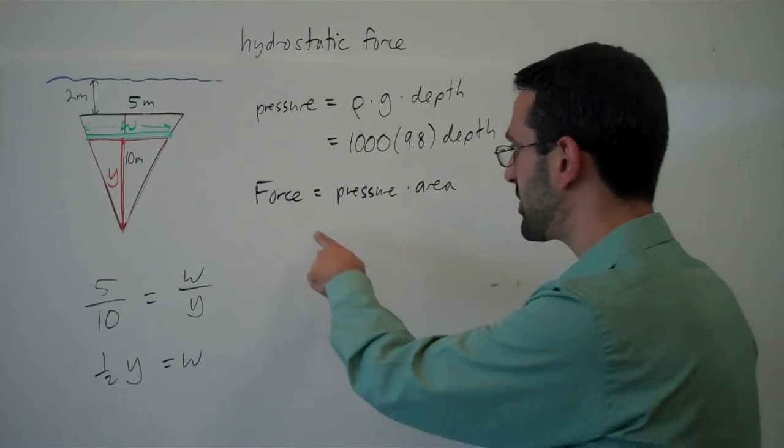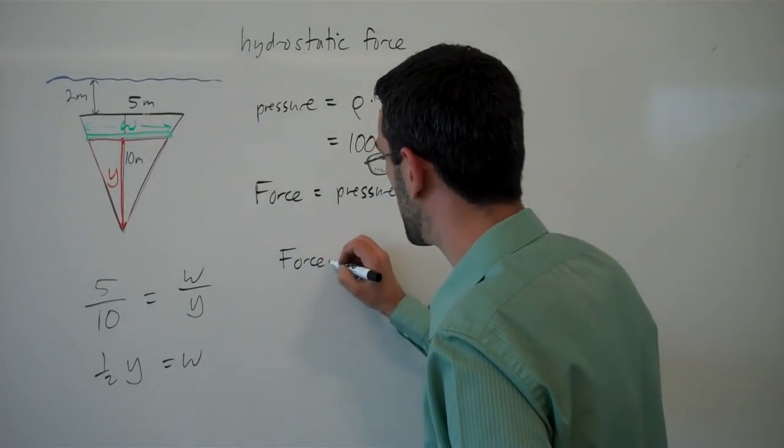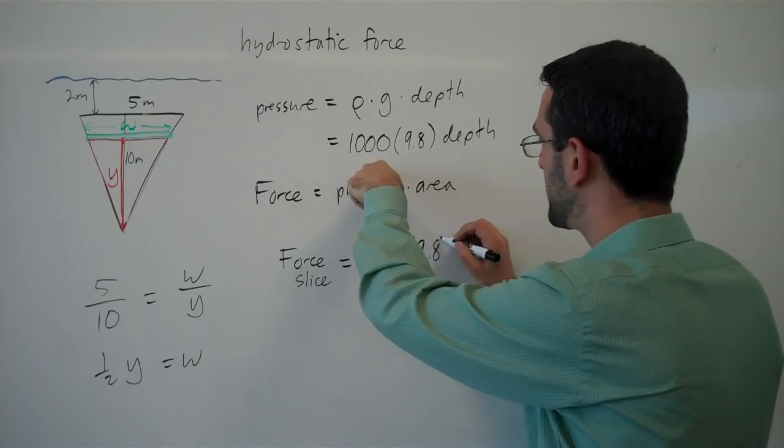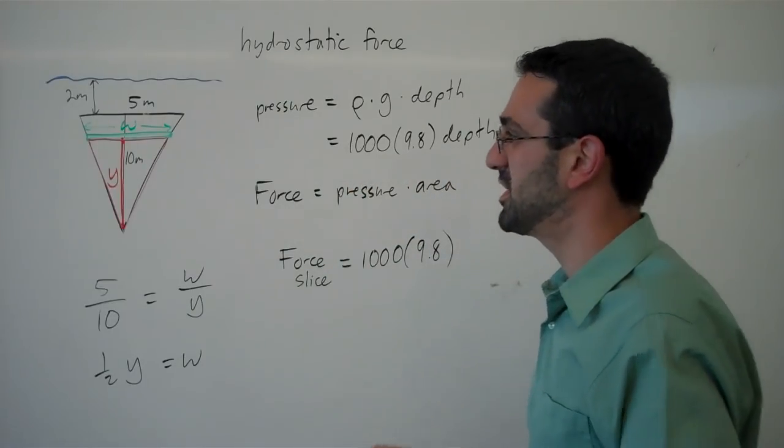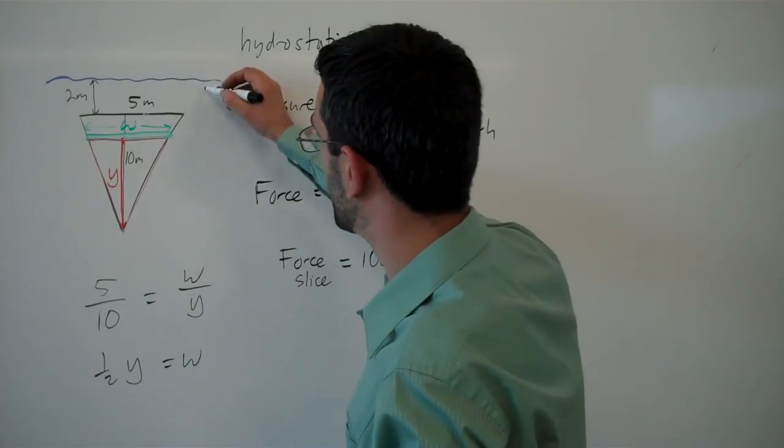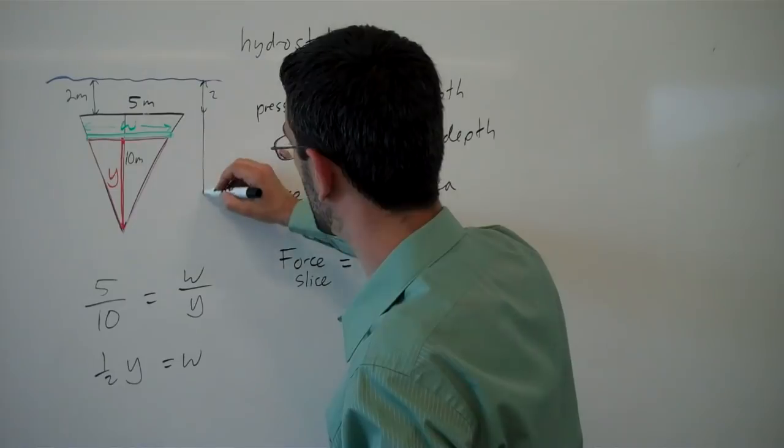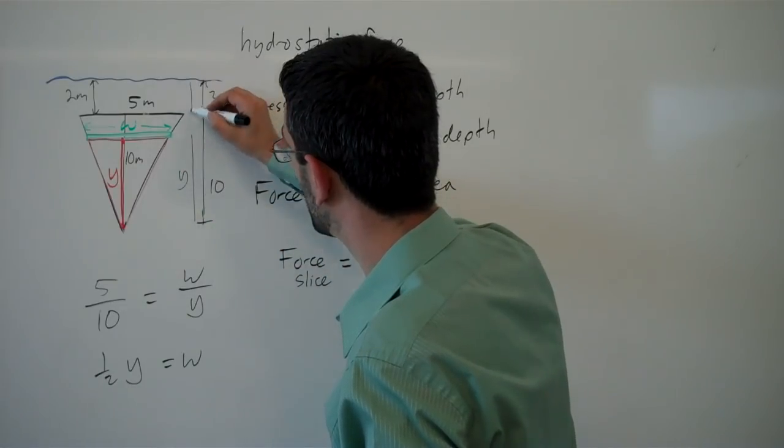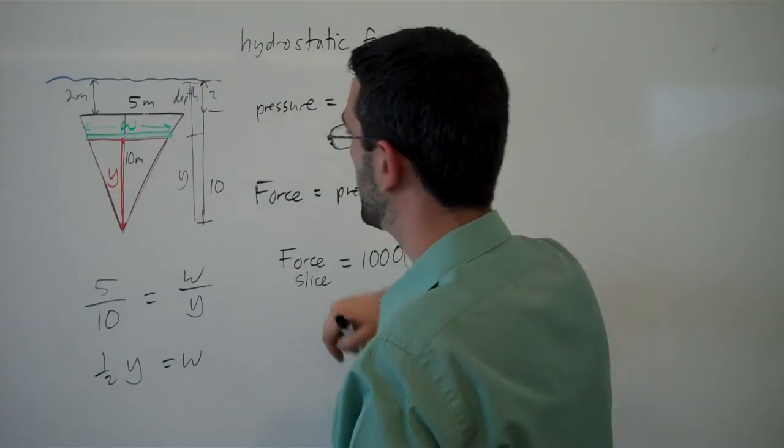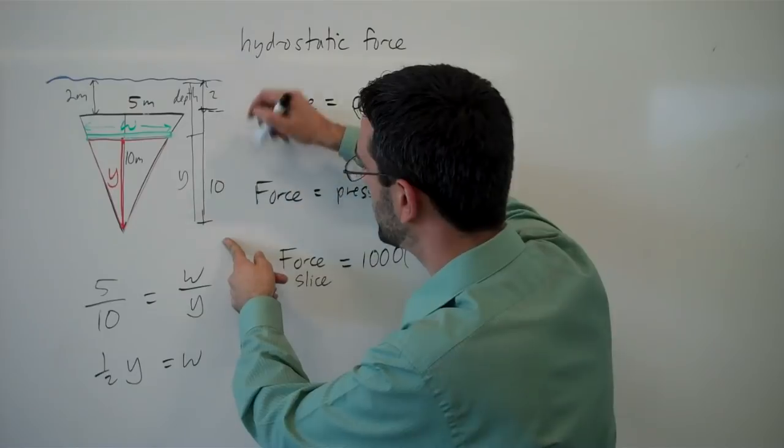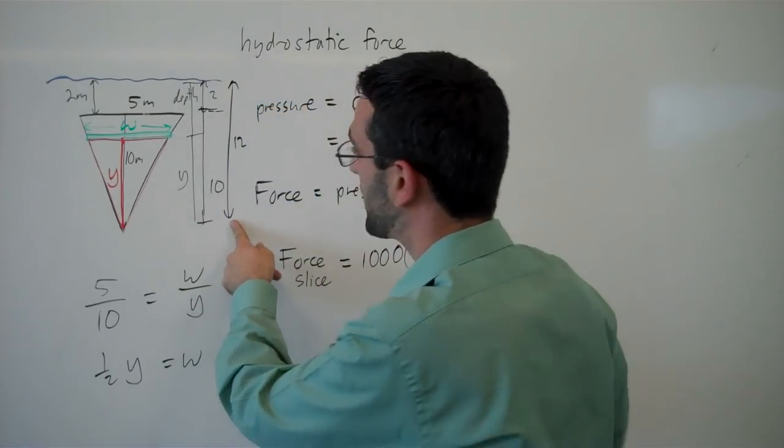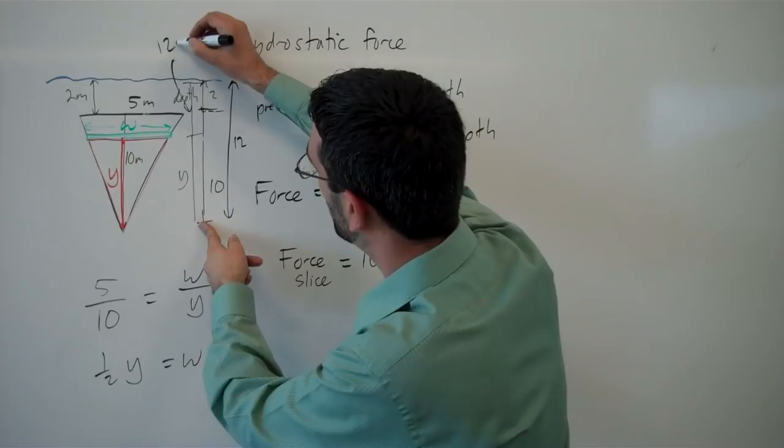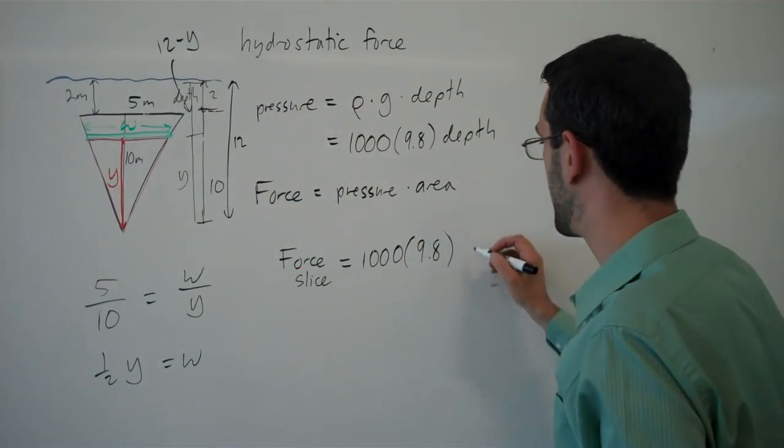Let's put this all together. The force on this one slice will be density times gravity times the depth of the slice. How deep is this slice? This distance is 2, this distance is 10, and this length is y. So we've got 2 plus 10, giving a total of 12 down to the bottom of the triangle, and then y up from that. That leaves me with 12 minus y as the depth of my slice.